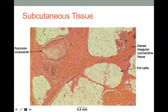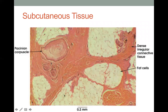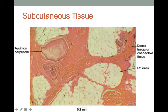In histological images, the hypodermis or subcutaneous adipose tissue is seen beneath the dense irregular connective tissue of the reticular dermis. The Pacinian corpuscle appears in this area and looks like a chopped onion in histology. Its function is to detect pressure and vibration.